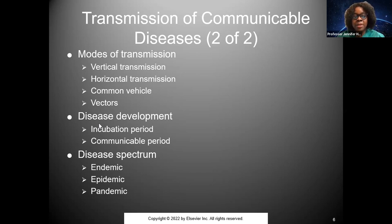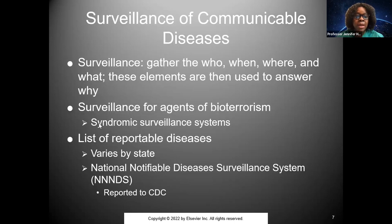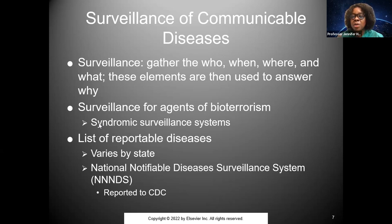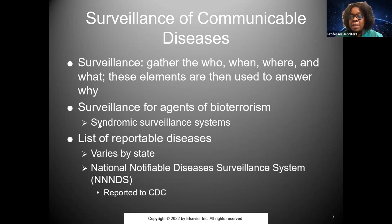Endemic, pandemic, and epidemic are terms you want to memorize. Endemic means it's known to be prevalent in that area. Epidemic means a widespread outbreak. Pandemic means it affects the majority of the world. Surveillance is so important because a good surveillance system, like at the CDC, systematically collects, organizes, and analyzes current, accurate, and complete data. You want to know the who, when, where, and what — these elements are used to answer the why. Surveillance is pivotal during outbreaks or any infection you're following, so you can respond promptly and prevent epidemics.